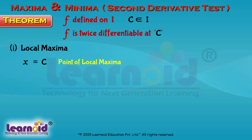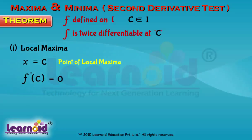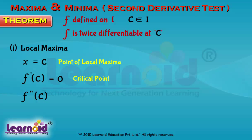c is a critical point, i.e., the first derivative f'(c) equals 0, and the second derivative f''(c) is less than 0, meaning negative.